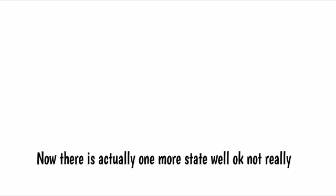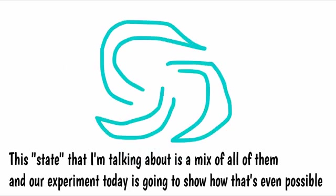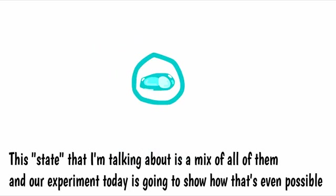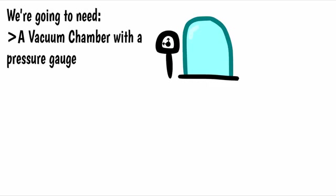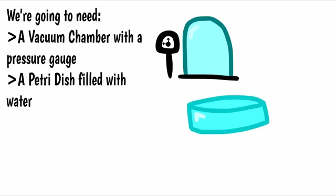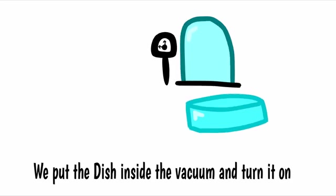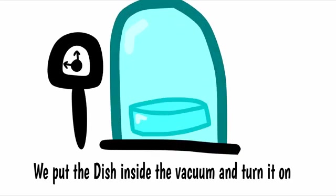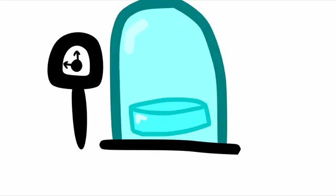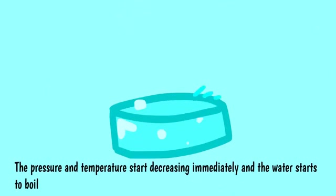Now there's actually one more state. Well, okay, not really. This state that I'm talking about is a mix of them all. And our experiment today is going to show how that's even possible. We're going to need a vacuum chamber with a pressure gauge, a petri dish filled with water. We put the petri dish inside the vacuum and turn it on. The pressure and temperature start decreasing immediately, and the water starts to boil.